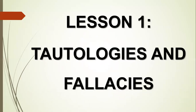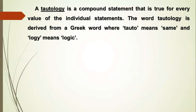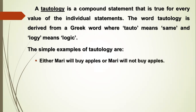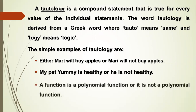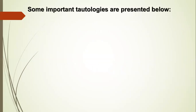Lesson 1: Tautologies and Fallacies. A tautology is a compound statement that is true for every value of the individual statements. The word tautology is derived from a Greek word where 'tauto' means same and 'logi' means logic. Simple examples of tautology are: Either Mari will buy apples or Mari will not buy apples; My pet Yummy is healthy or he's not healthy; A function is a polynomial function or it is not a polynomial function.